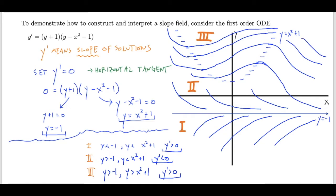This is a very approximate view of what a slope field allows us to determine. One thing I can say definitively is that for every solution of this differential equation, regardless of initial condition, all solutions will eventually tend to negative 1 — they're always decreasing and will approach y equals negative 1. I can also note that solutions with initial conditions in region 1 have no critical points, some solutions in region 2 have no critical points, but solutions passing through region 3 will have two critical points: a local minimum and a local maximum.